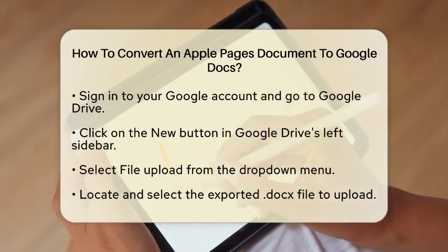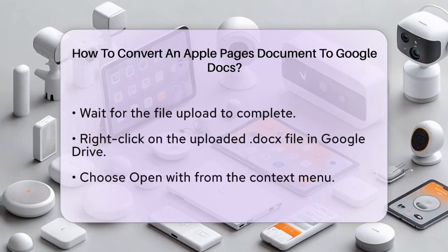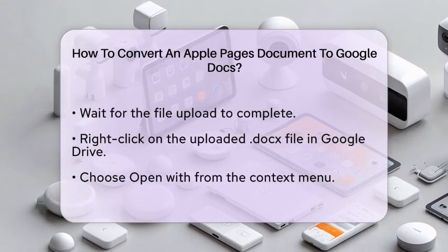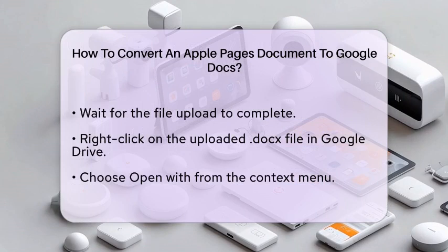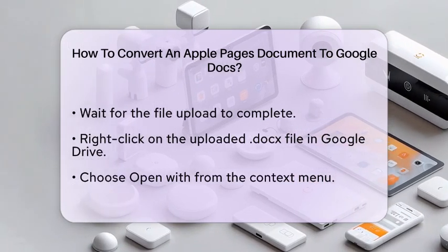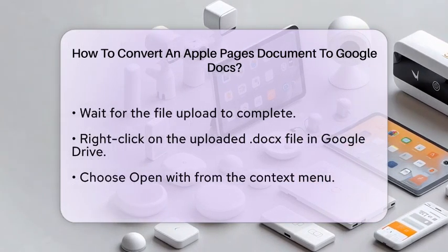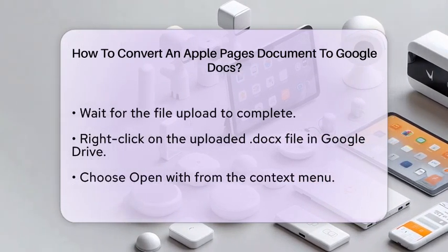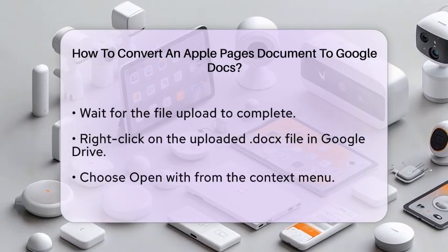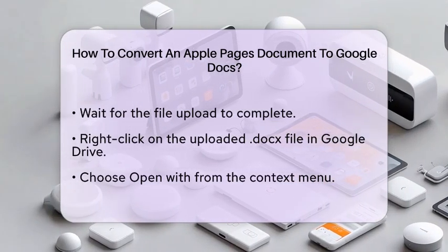Wait a moment for the file to upload completely. Once the upload is finished, locate the Docx file in your Google Drive. Right-click on the file, and a menu will pop up. From this menu, select Open With, and then choose Google Docs. This action will automatically convert your file into a Google Docs format.